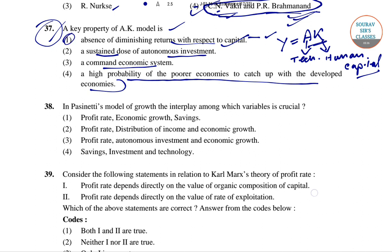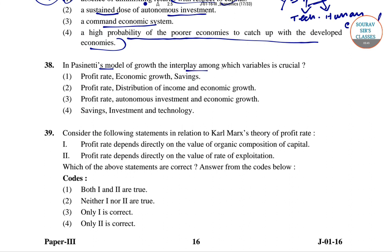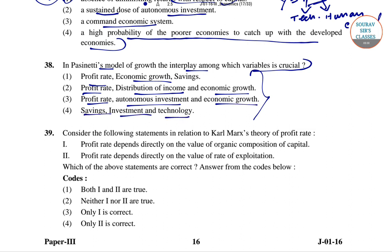Now we'll go to question number 38. In Pasinetti's model of growth, the interplay among which variables is crucial? Four options are given: profit rate, economic growth and savings; profit rate, distribution of income and economic growth; profit rate, autonomous investment and economic growth; and savings, investment and technology.